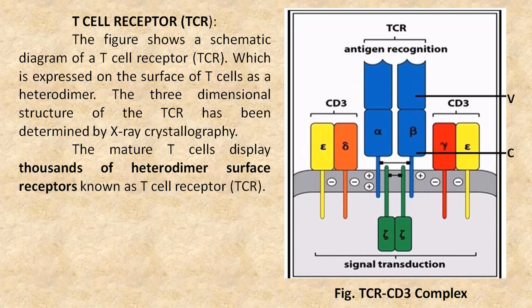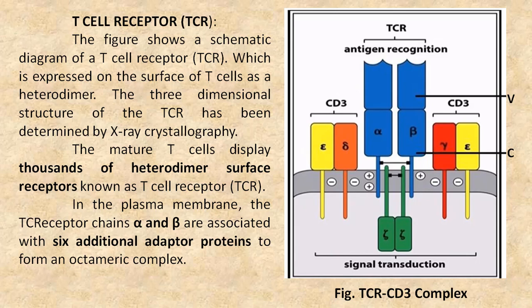The mature T cells display thousands of heterodimer surface receptors known as T cell receptor. In the plasma membrane, the T cell receptor chains alpha and beta are associated with six additional adapter proteins to form an octameric complex.